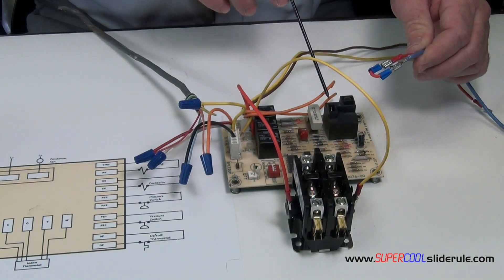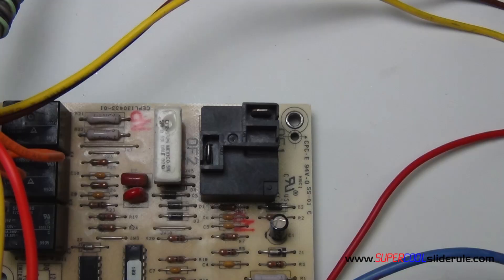The reason for this is because the defrost board completes the circuit to the condenser fan. So we want to make sure that that will receive power at all times.